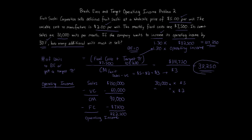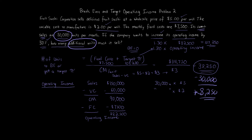Remember, this question is asking for the additional units it must sell beyond the current sales of 30,000 units. So from the 38,250 units we calculated, we subtract the 30,000 units currently being sold. That is if the company wants to increase its operating income by 30%. So the correct answer for this problem is 8,250 units — that's the amount it needs to sell beyond the current 30,000.